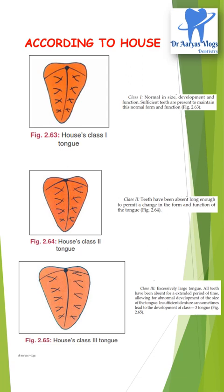In Class 2, the teeth have been absent long enough to permit a change in form and function of the tongue. In Class 3, there is an excessively large tongue — all teeth have been absent for an extended period, allowing for abnormal development of tongue size. Insufficient dentures can sometimes lead to development of a Class 3 tongue.